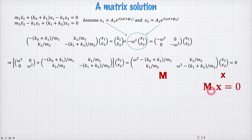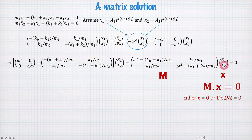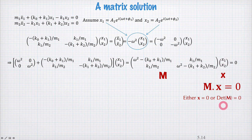This is the equation we're trying to solve, in this case for a two by two matrix and a two by one vector. The possible solutions here are either that x is equal to zero — so these functions are always zero, in which case this equation is always satisfied — or the determinant of M is equal to zero, in which case the two rows of the matrix are not linearly independent and that also allows us to solve this equation for all time. The first case is pretty boring, so we'll think about the determinant of M being equal to zero and see what that gives us.